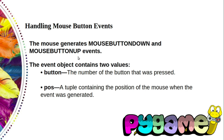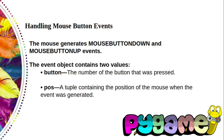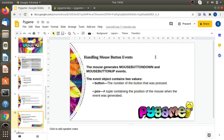Both types of mouse button events contain two values. There is button — the number of the button that was pressed; a value of 1 indicates the left mouse button was pressed and 2 indicates the right button was pressed. And pos — a tuple containing the position of the mouse when the event was generated. I hope you are all able to understand the different types of events. In the next video, we will see the keyboard event and how to handle it, and we will write code to understand it better. Thank you everyone.